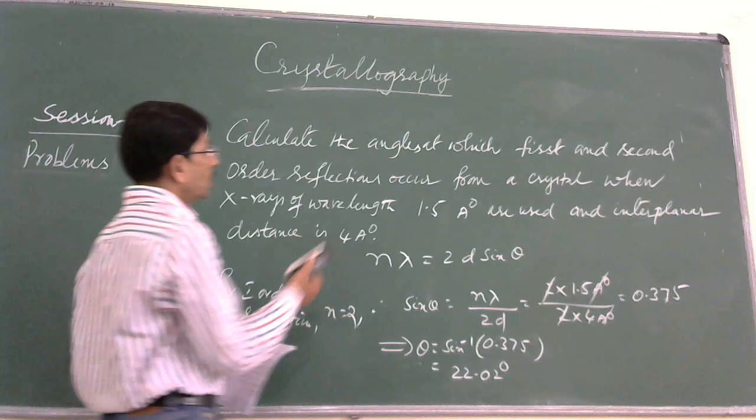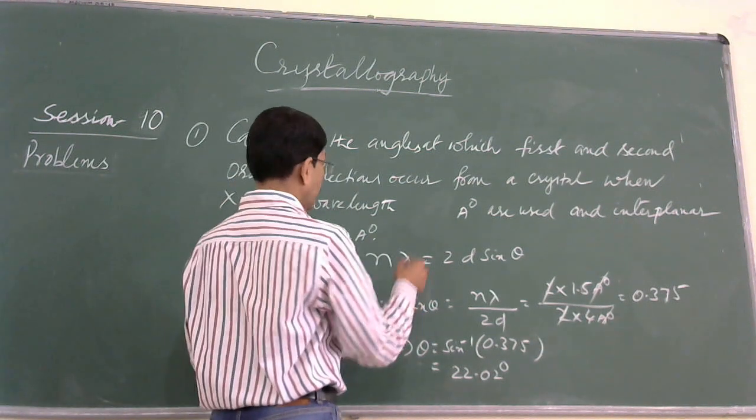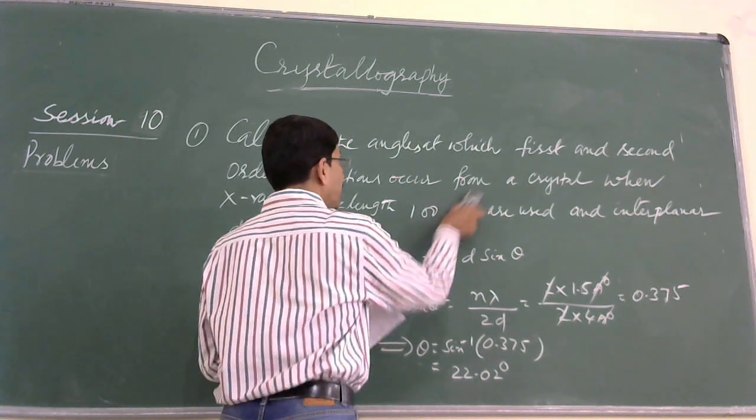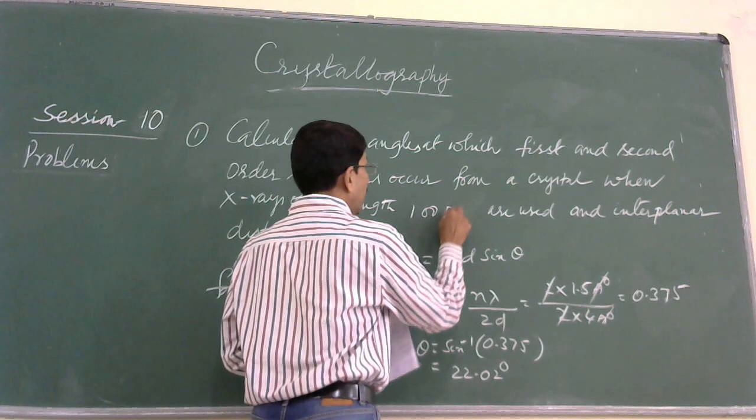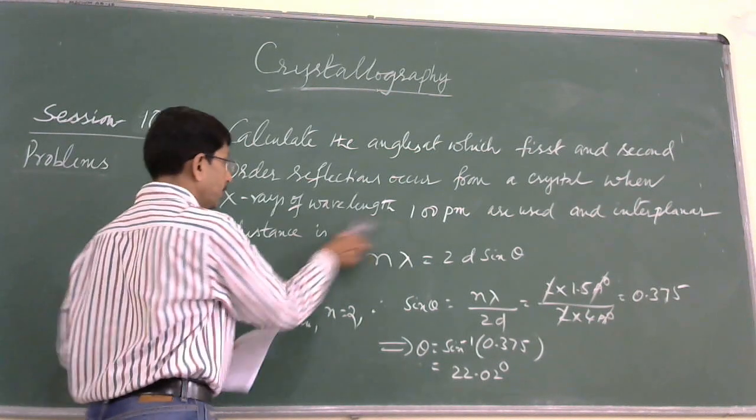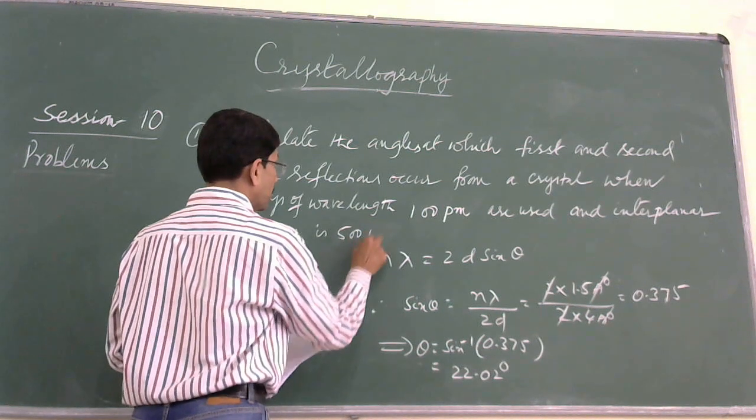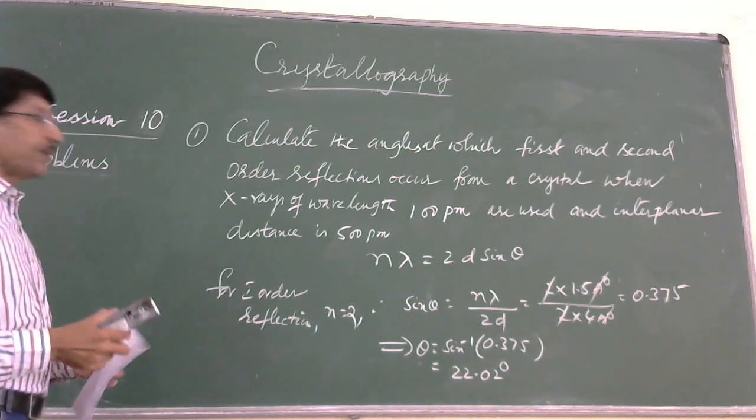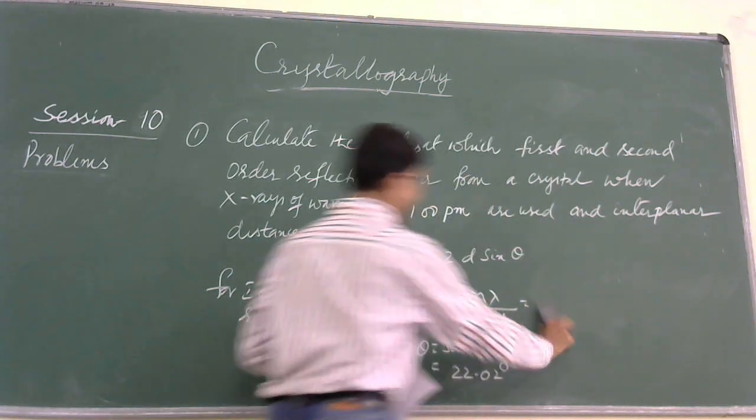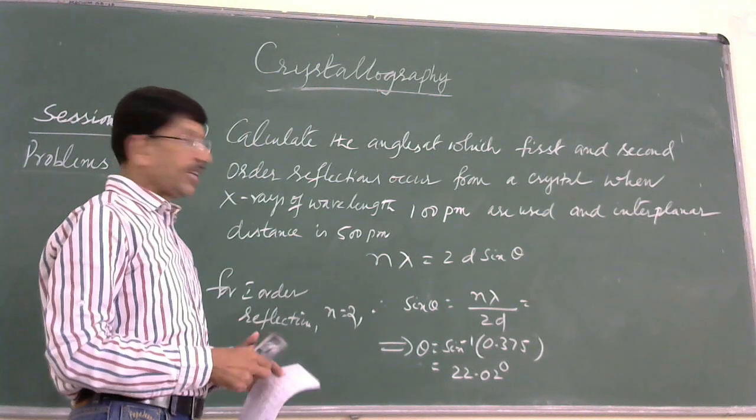Similarly, I'll change the data to 100 picometers. Instead of angstroms, 1 angstrom is 10 to the power minus 10 meters, and 1 picometer is 10 to the power minus 12 meters. Lambda is 100 picometers and the interplanar distance is 500 picometers. The problem is the same, but the data is changed. So now let's substitute.